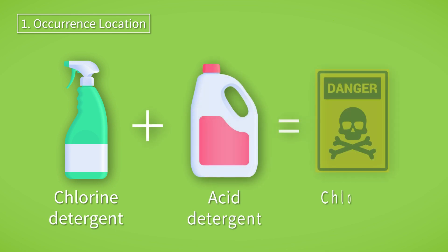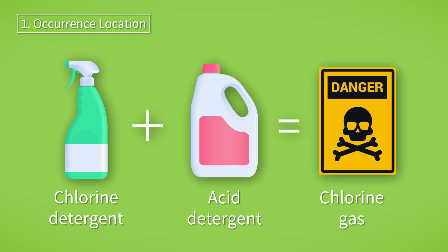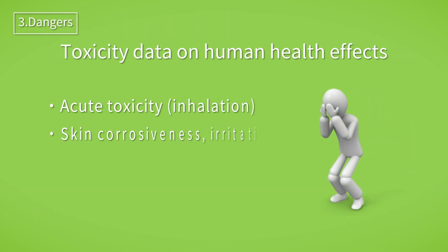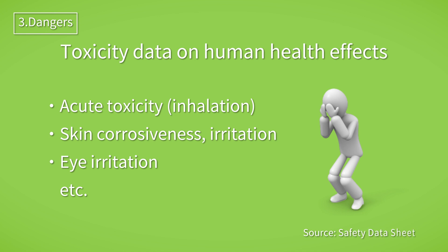Chlorine is known to occur in the average household when, for example, chlorine bleach is mixed with an acid detergent. Chlorine is also characterized by its ability to combine with other elements to form compounds with various properties. These compounds are used in various industries, including disinfection of water and sewage systems, and as a raw material for plastics.